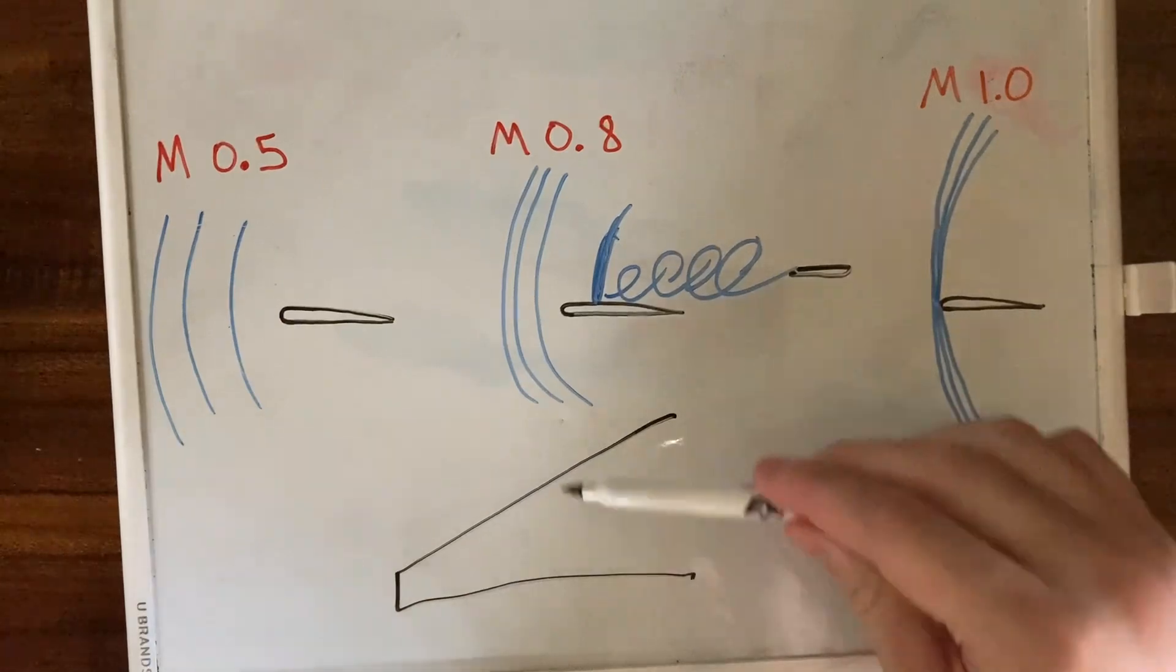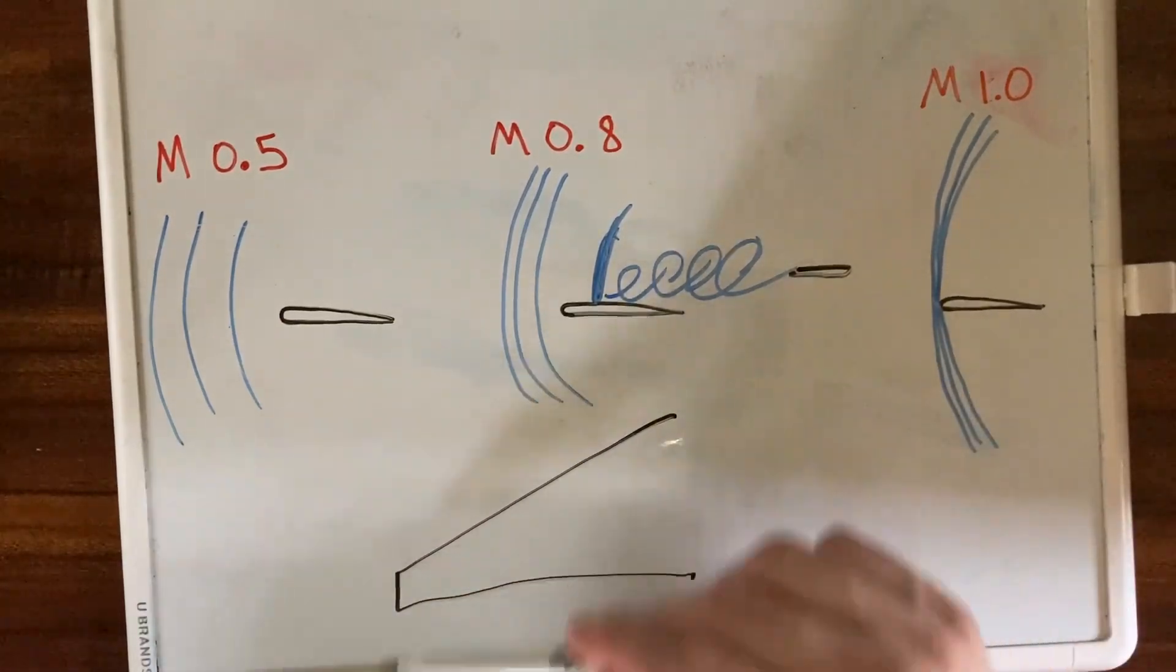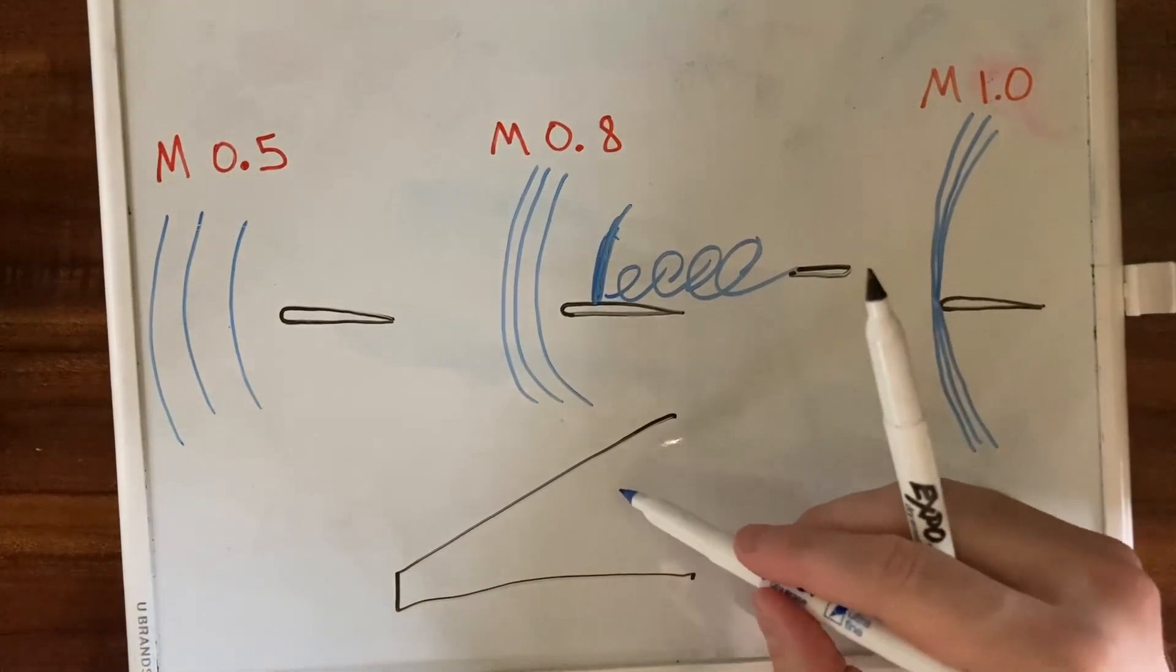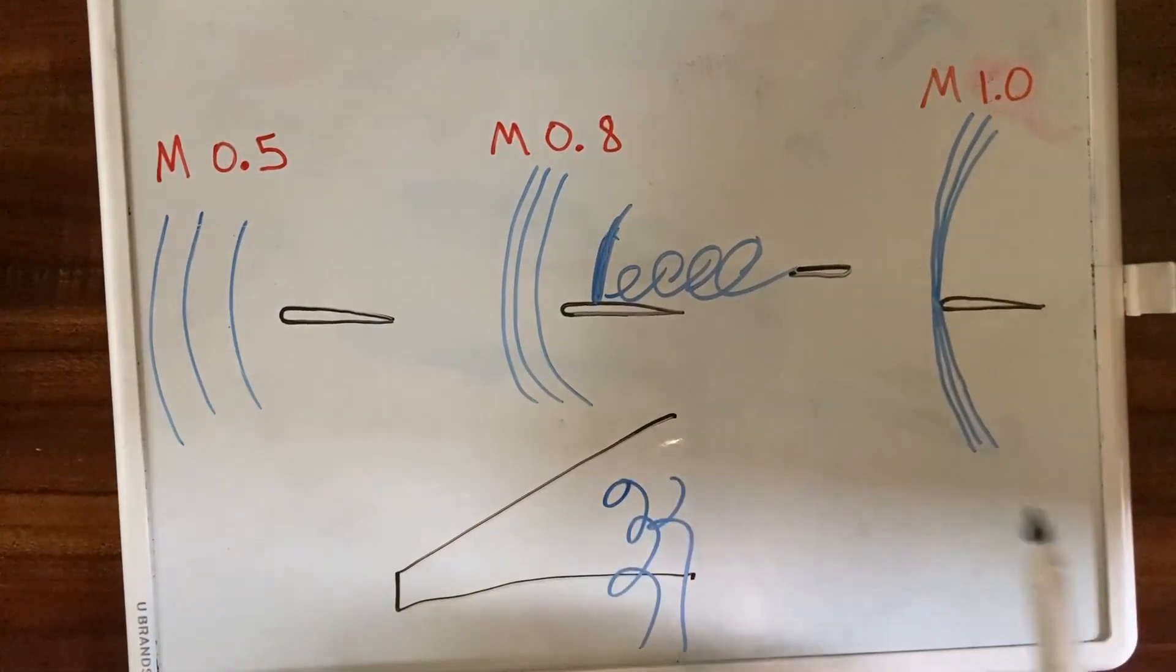It means that the air flowing over this part of the wing reaches Mach 1 sooner than the air flowing over the thinner, less cambered parts of the wing. So the area that starts experiencing this shock wave and turbulent airflow is at the root.